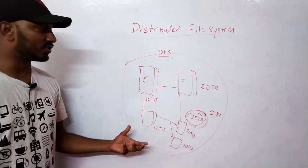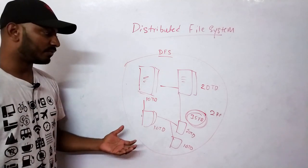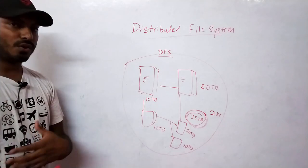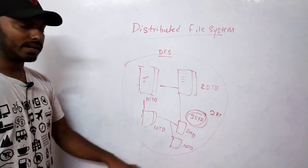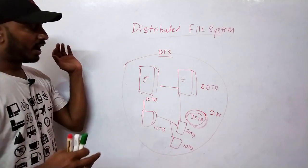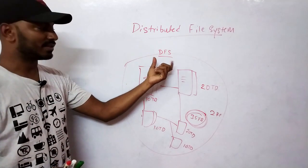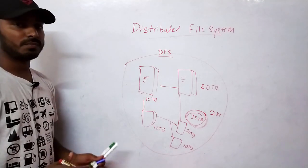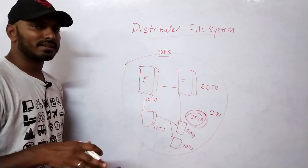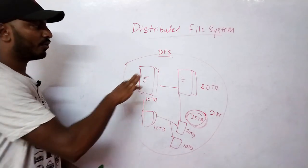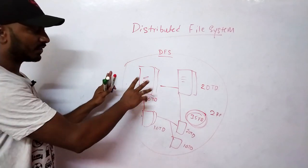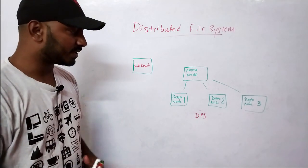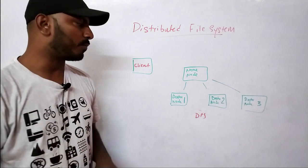Today we really need distributed file systems because of big data. We use commodity hardware — not supercomputers — just regular computers like the ones at home, which may fail at any time. So the logic for handling failures and data safety is embedded in the distributed file system. Examples include HDFS (Hadoop Distributed File System) and GlusterFS. Let me explain how a distributed file system handles reads and writes.